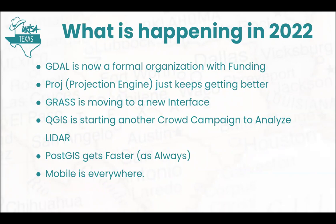So what's happening now in 2022? GDAL is now a formal organization — they've coalesced and got funding. It's no longer like the wild west out there. Proj just keeps getting better — they started redevelopment several years ago. GRASS is moving to a new single-window interface, after having a two-window interface since the early 90s. Not everybody's thrilled about it, but it's 30 years in the making. QGIS is starting another crowd campaign for actually working with LiDAR — you'll be able to analyze, extract, and manipulate LiDAR data, not just look at it. PostGIS gets faster.